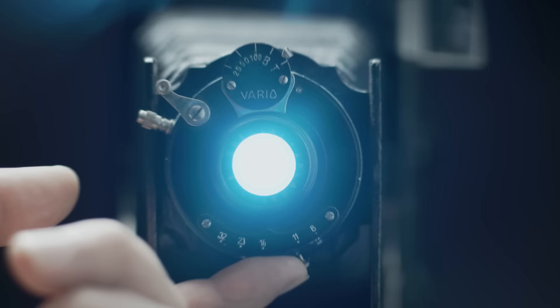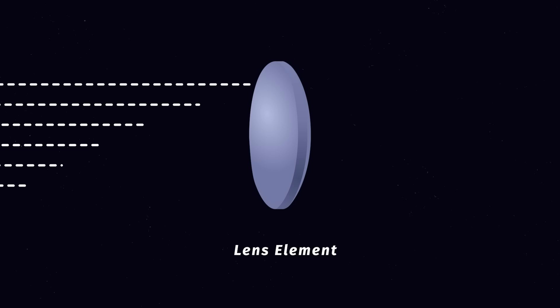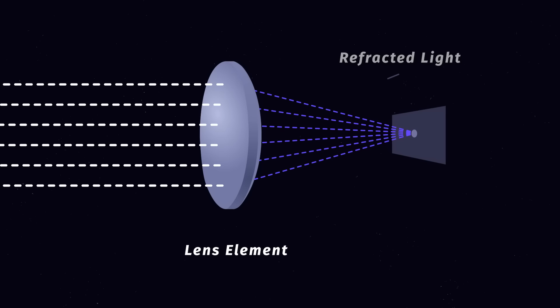Before we begin, let's go over how a lens works. Light passes into the lens and through different glass shapes called lens elements. These elements slightly bend or refract the light so it lands on a focal point on an image sensor. This is where a picture is created.